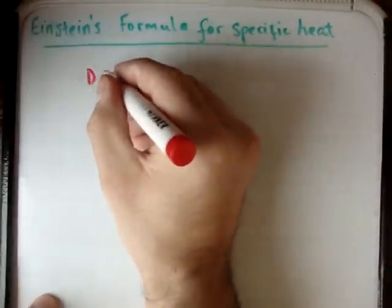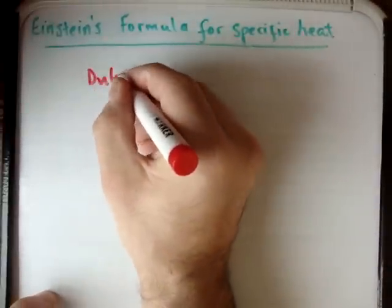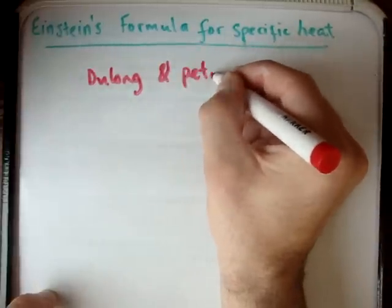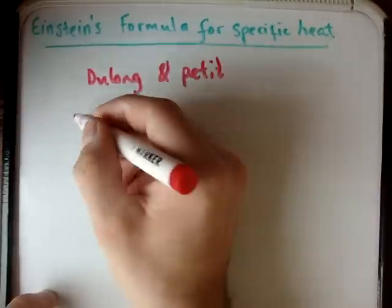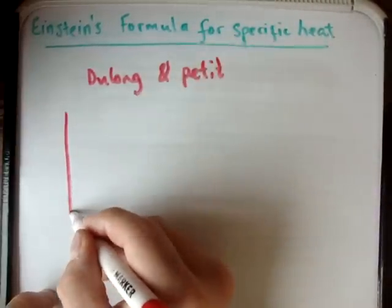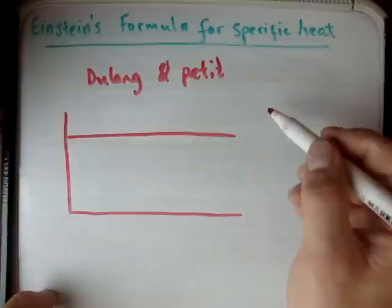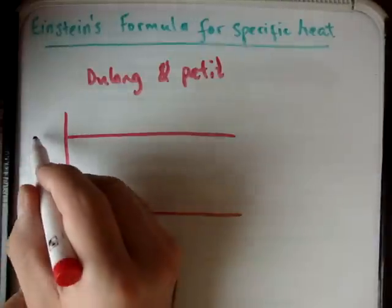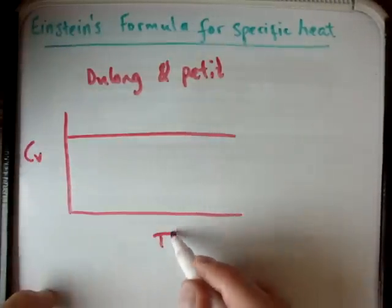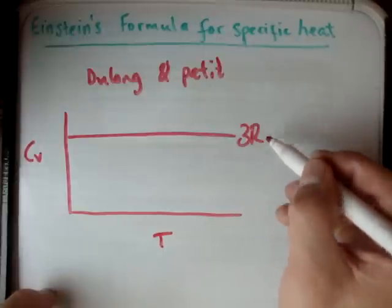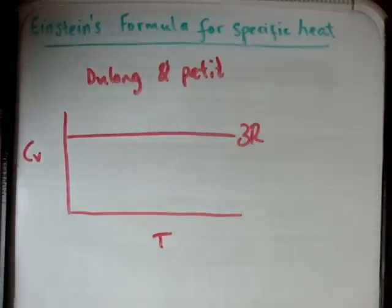This is called the Law of Dulong and Petit. What these guys found was that at sufficiently high temperatures, the specific heat capacity of almost every solid approached the value of 3 times R, where R is the molar gas constant.